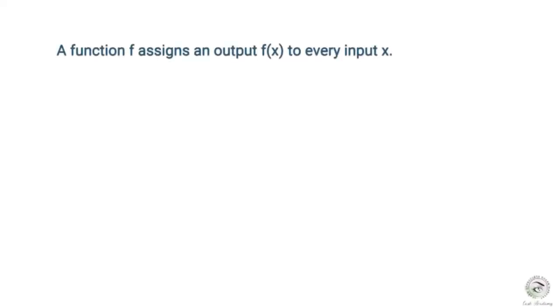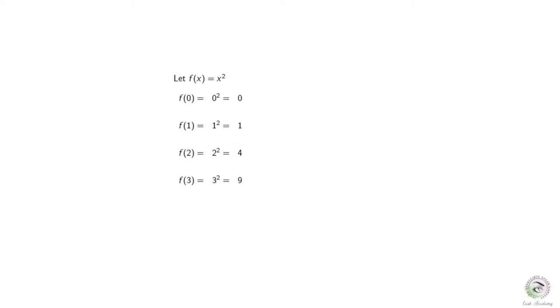A function f assigns an output f to every input x. For example, consider the function f(x) equals x squared. If you input 0, the output is 0. If you input 1, the output is 1. If you input 2, the output is 4. If you input 3, the output is 9.